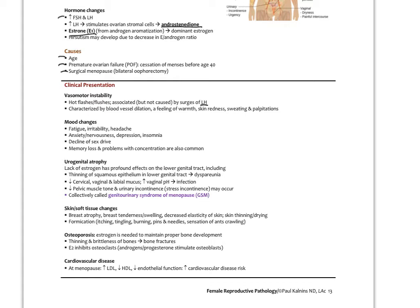Urogenital atrophy results from lack of estrogen — with thinning of the squamous epithelium in the lower genital tract causing dyspareunia (painful intercourse), decreased cervical, vaginal, and labial mucus, increased vaginal pH increasing susceptibility to infection, and decreased pelvic tone with urinary stress incontinence due to weakening of pelvic floor muscles from low estrogen. Urge incontinence by contrast is related to nervous system overactivation. Collectively these symptoms are called the genitourinary syndrome of menopause (GSM).